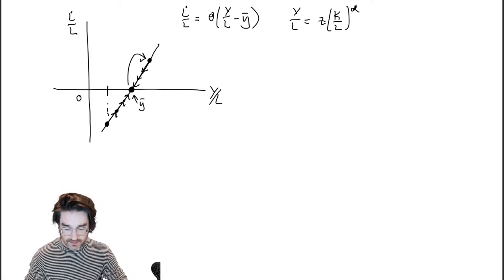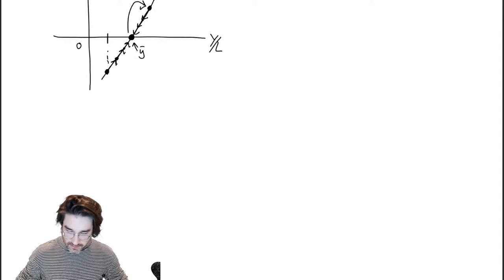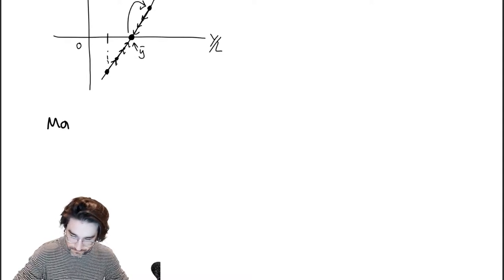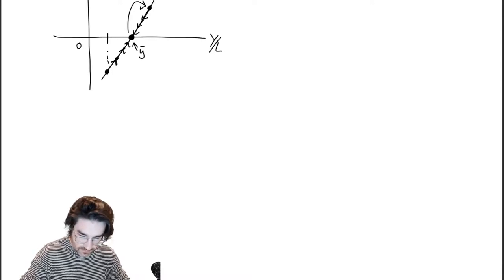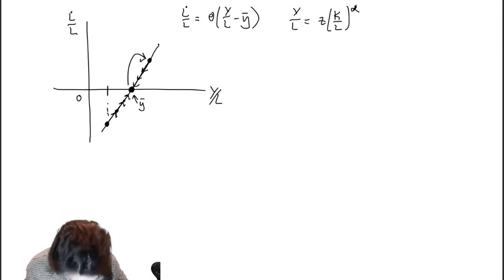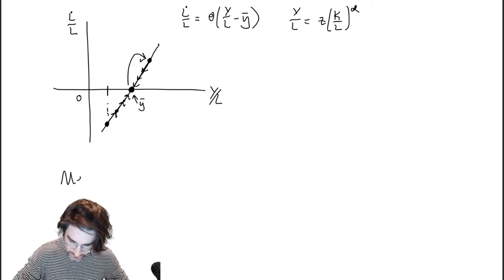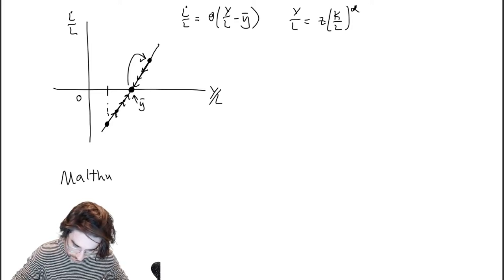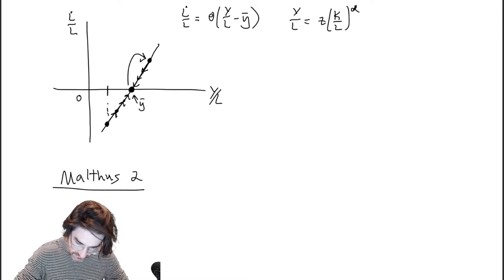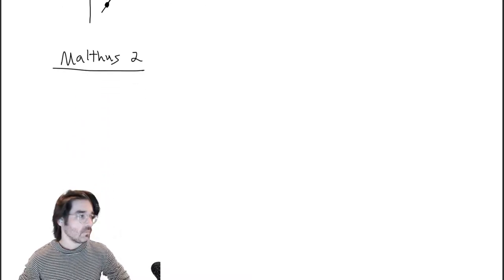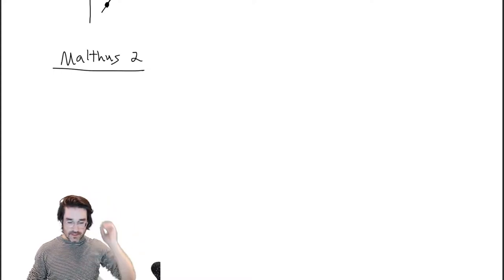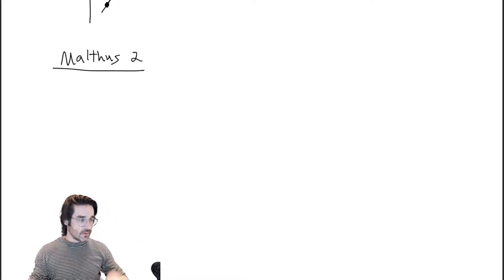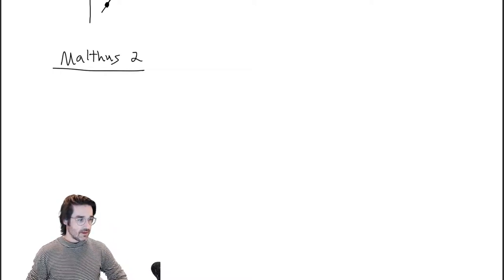All right, let's get started. I'll give you a quick overview — a hyper-fast overview of what we did last time. This is like Malthus 2. Basically I'll give you only the critical elements — we can accomplish that in two equations and I'll draw you a picture and go from there.